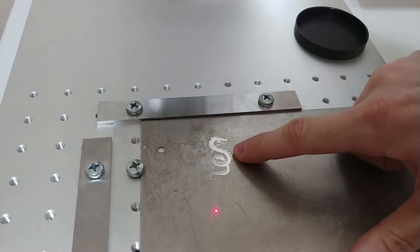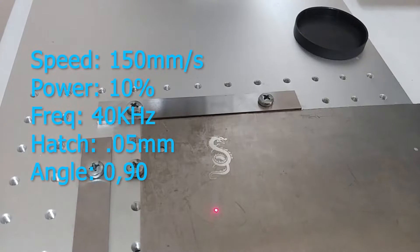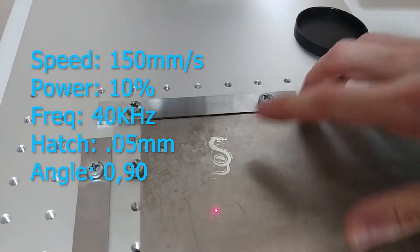So the settings I used to mark this was 150 millimeters per second speed, 10% power, and 40 kilohertz frequency. And the hatch was a line distance of 0.05 millimeters at 0 and 90 degrees.